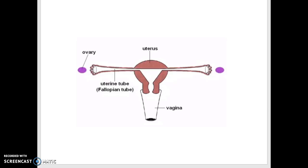Once released, the oocyte will enter the uterine tube where it might be fertilized. Then if fertilized, it will implant in the uterus wall.